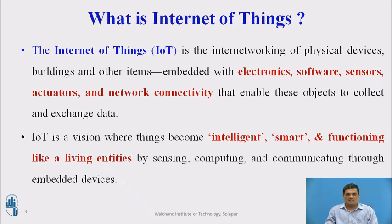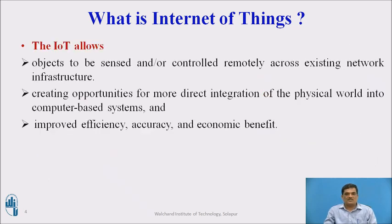IoT is the internetworking of physical devices, buildings, and other items embedded with electronics, software, sensors, actuators, and network connectivity that enables these objects to collect and exchange data. The main vision of IoT is to make devices intelligent and smart, functioning like living entities by sensing, computing, and communicating through embedded devices. IoT allows objects to be sensed and controlled remotely across existing network infrastructure, creating opportunities for more direct integration of the physical world into computer-based systems, improving efficiency, accuracy, and economic benefit.